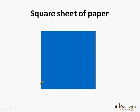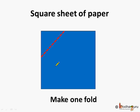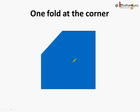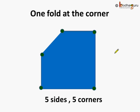Now here we have a square sheet of paper and we know there are four sides and four corners. Can this paper have more corners and more sides? Yes, it can. How? Let's do it. Now we will make a fold at this corner of the square sheet of paper. See, this is folded. Now how many sides are there and how many corners? First, see how many corners are there: one, two, three, four, five. Five corners are there. And how many sides? Let's see: one, two, three, four and five. So now the paper has five sides and five corners.